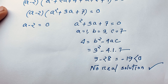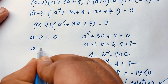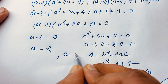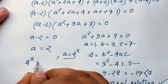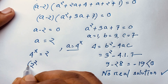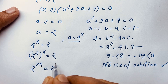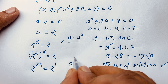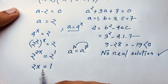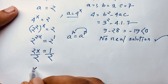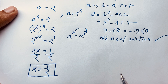We need the real solution, so from case 1: a minus 2 equals 0, giving a equals 2. Recall we let a equal 4 to the power x. So 4 to the power x equals 2, which means 2 squared to the power x equals 2, so 2 to the power 2x equals 2 to the power 1. Since the bases are equal, 2x equals 1, and dividing both sides by 2 gives x equals 1 over 2. This is our final answer.